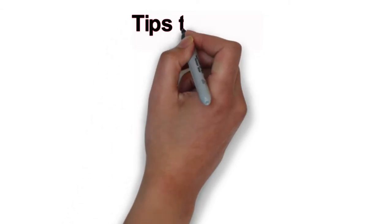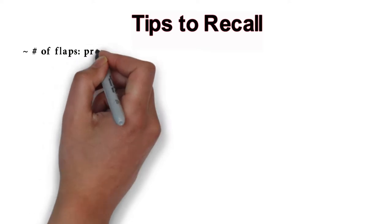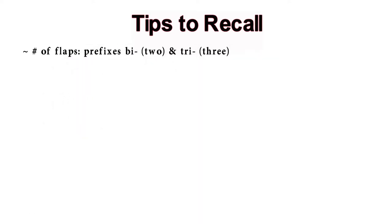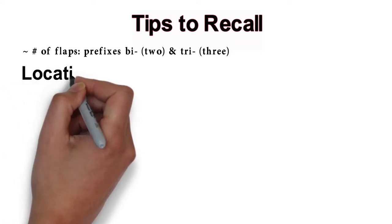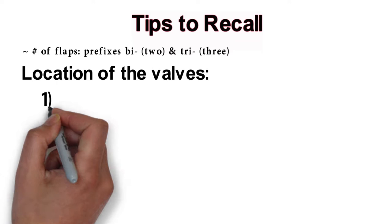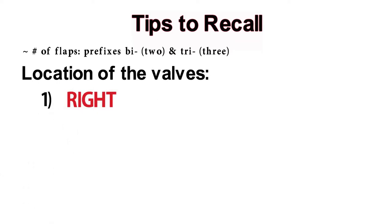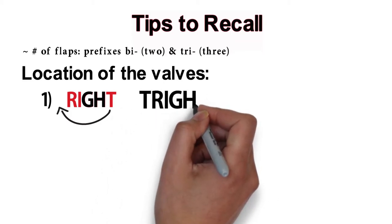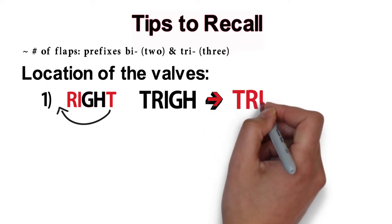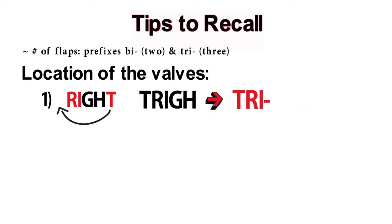A couple of tips to remember this: the easiest way to remember the number of flaps is to look at the prefixes — bi for two and tri for three. The more difficult thing to remember is which valve is located on which side. One way to look at it: if we take the letter T at the end of 'right' and move it to the beginning, we get 'TRIGH', which has the letters to create the prefix TRI. So you can think of it as the right side is associated with the tricuspid valve.